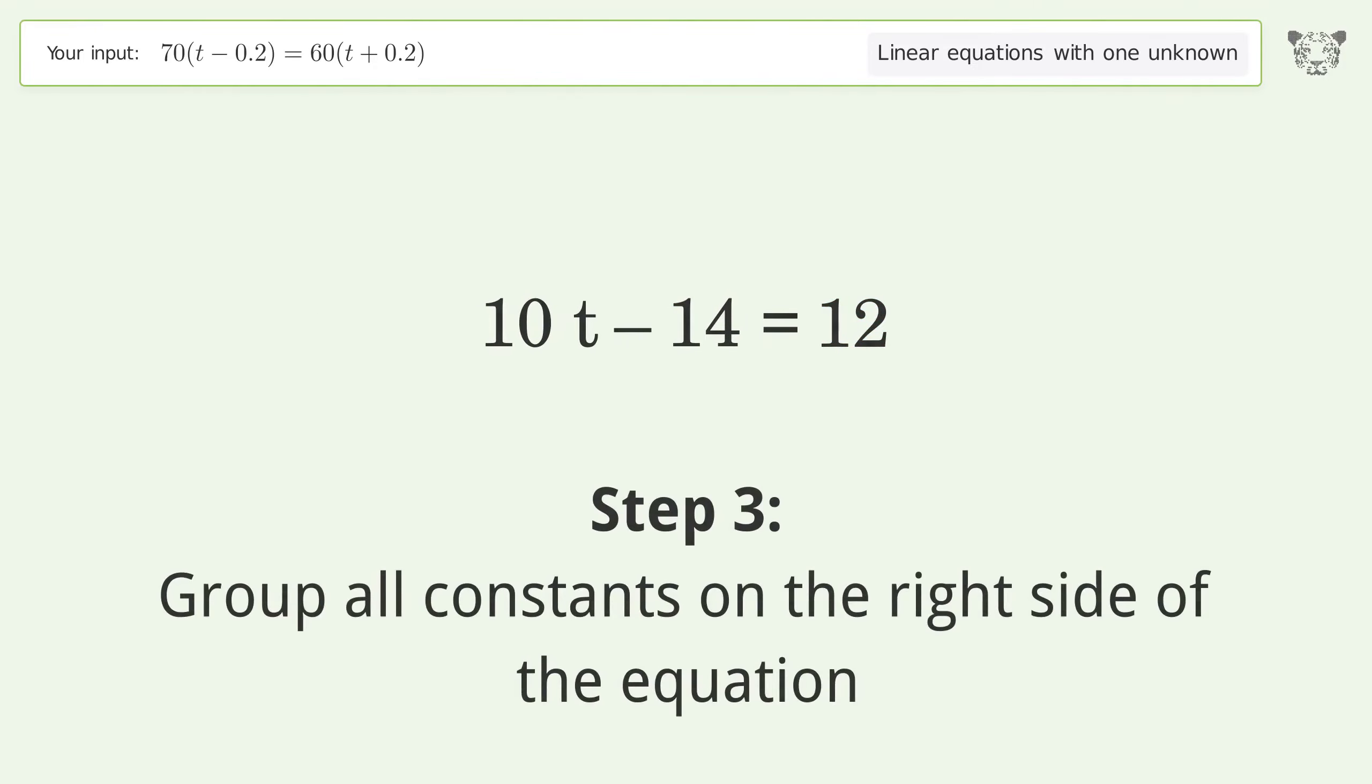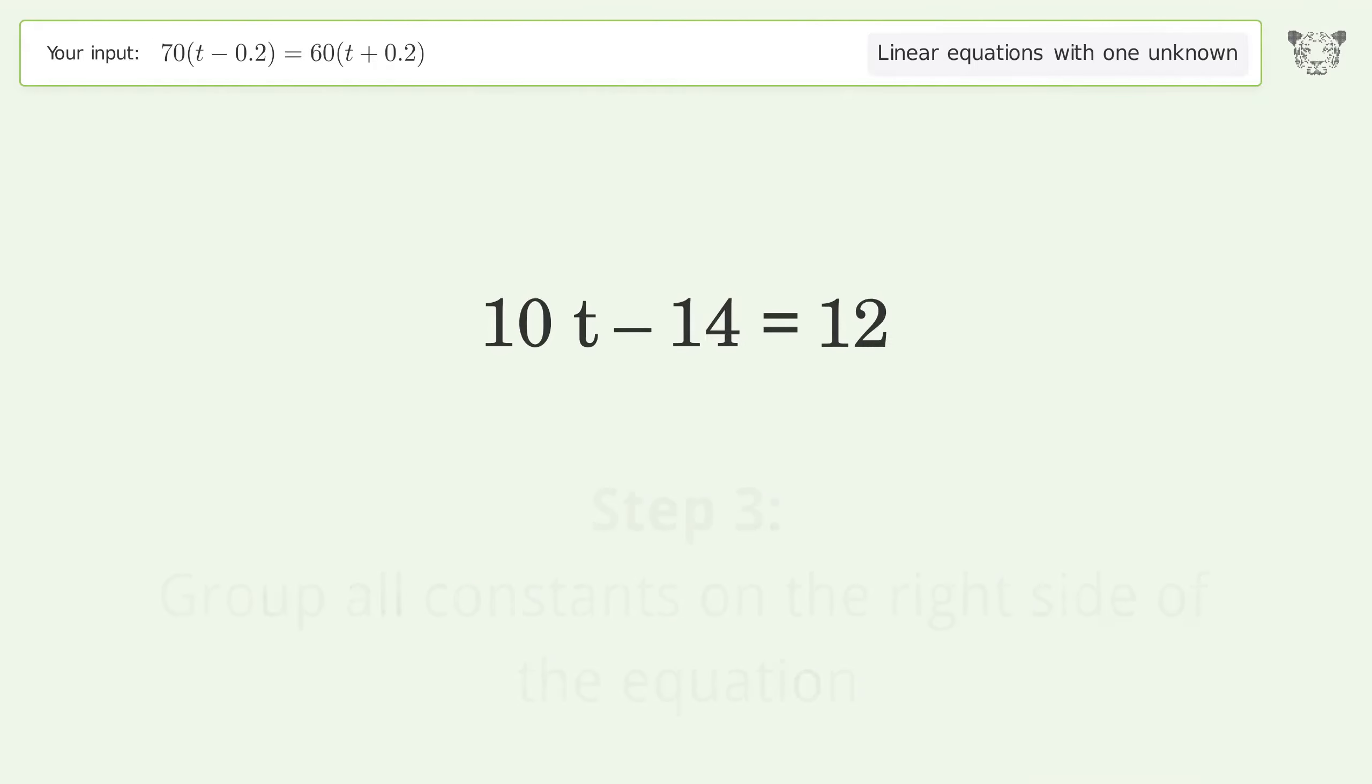Step 3: Group all constants on the right side of the equation. Add 14 to both sides. Simplify the arithmetic.